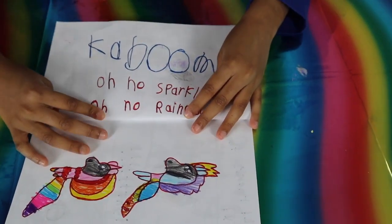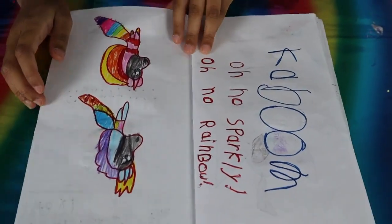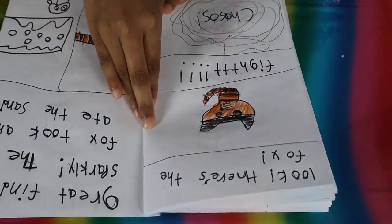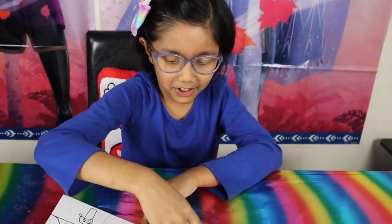Oh, no. Oh, no, Sparkly. Oh, no, Rainbow. Look. There's a fox. And there's the chaos. Great finding, Sparkly.